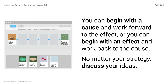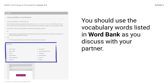Whether you are working forward or backwards, it will be helpful to talk with your partner about why one thing caused another thing to happen. Even if you think you know the order of these causes and effects, talking about why something happened is a good way to check your ideas. You should use the vocabulary words listed in the Word Bank as you discuss with your partner.